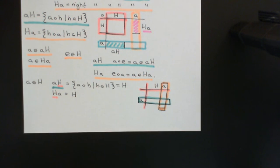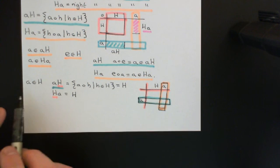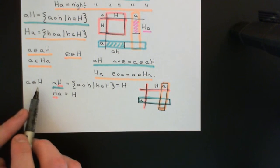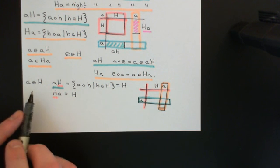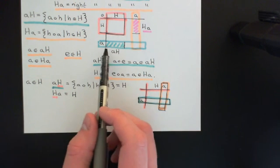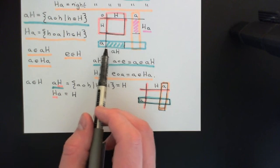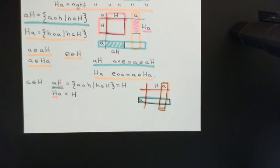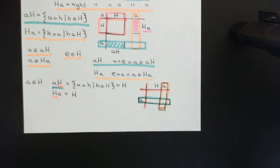In the next video, we'll talk about what happens if little a is not an element of capital H. If little a turns out not to be an element of capital H, then it becomes more interesting. We will see that the left and right cosets of H under a will actually be completely free of elements in the subgroup — completely distinct from the subgroup — and that's going to turn out to be very, very powerful.